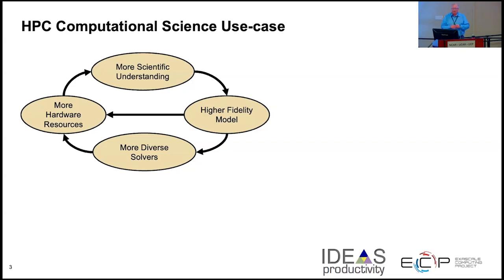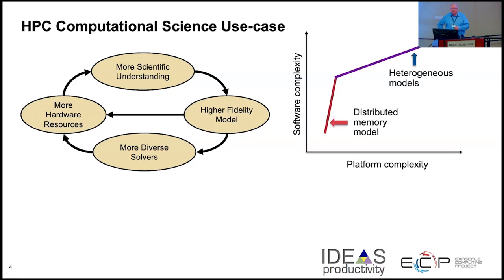We talk about this virtuous cycle that brings us to attempts to bring us to a better understanding of science, that gives us more complex software and more challenging situations to deal with. Over time we've spent a lot of time working on this distributed memory model of computing where we just added more and more cores, and everybody was mostly happy. But then we went through this phase change and now we're talking about heterogeneous computing, where both the platforms and the software are becoming more complex.